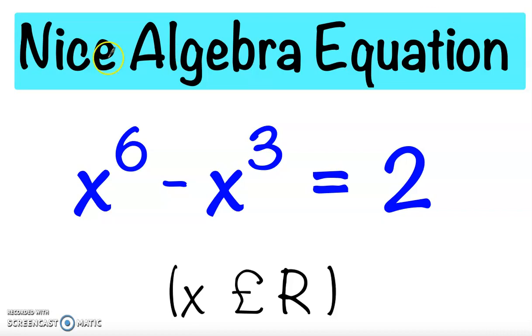Hi all, it's Super Easy Math. In this video we're going to solve this nice algebra equation: x to the power 6 minus x cubed equals 2, where x belongs to R. Pause the video if you want to give it a try.